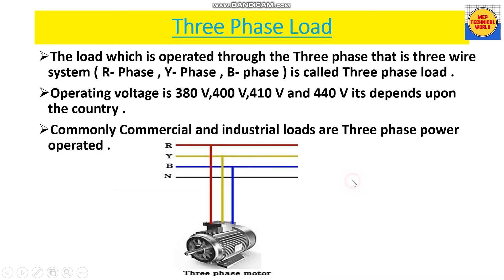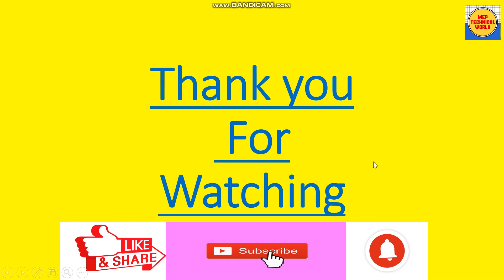Three phase load is the load which is operated through a three phase, that is a three-wire system — R phase (red), Y phase (yellow), and B phase (blue). Operating voltages are 380 volts, 400 volts, 410 volts, and 440 volts, depending upon the country. Commonly, commercial and industrial loads are three phase operated. As we can see, this motor is a three phase motor connected with R, Y, B phases and also neutral, with the red, white, and blue taps all connected to drive three phase motors.